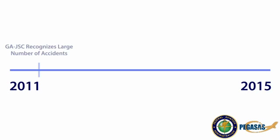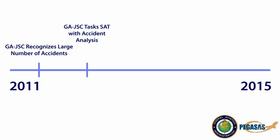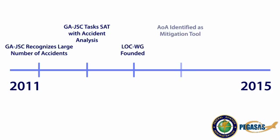In 2011, the General Aviation Joint Steering Committee, or GAJSC, recognized the need to address loss of control accidents and started researching ways to mitigate these events. They tasked the safety analysis team with analysis of accidents caused by loss of control. Following those findings, the loss of control working group was founded to research and make recommendations for potential solutions. The working group determined that angle of attack displays could be a useful mitigation strategy for general aviation aircraft.